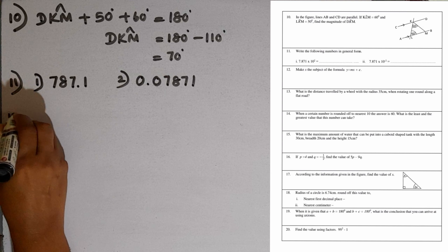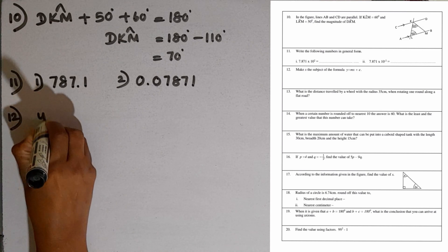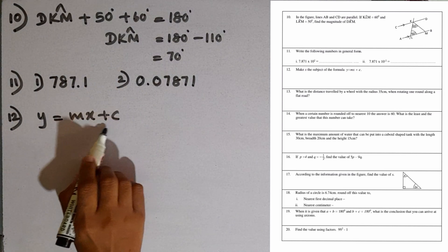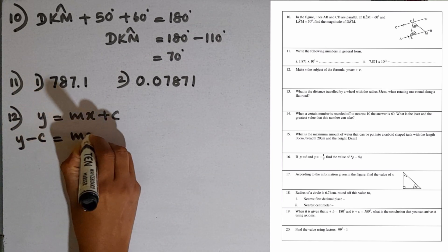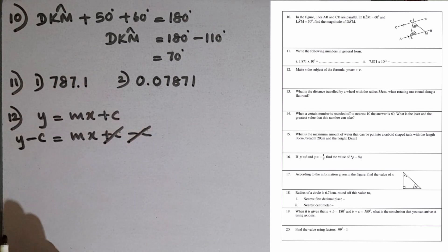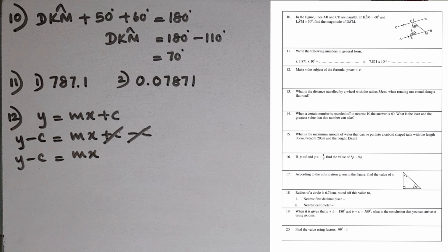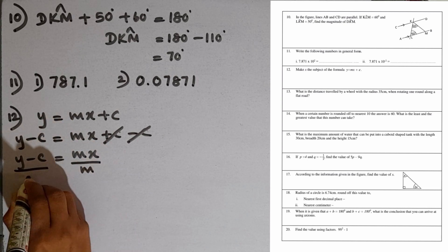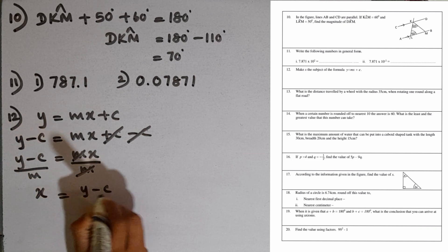Question number 12: make X the subject of the formula Y equals MX plus C. First, subtract C from both sides: Y minus C equals MX plus C minus C, so Y minus C equals MX. Then divide both sides by M, and M cancels on the right side. Therefore X equals Y minus C over M.